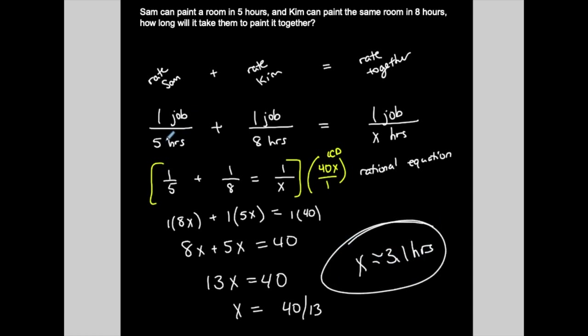So, it takes them approximately 3.1 hours to do the job together. It should take them faster than if they were to do it alone, right? So, anytime you do these rate problems, the same way. The rate at which one of them does it plus the rate at which the other does it should be the rate at which they do it together.